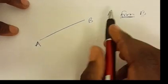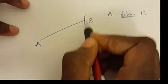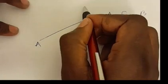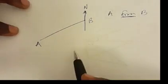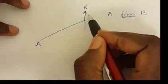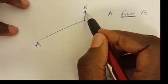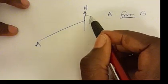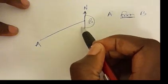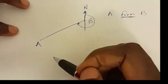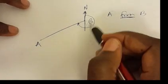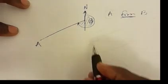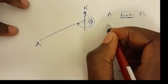At the point where you are standing, you draw a north line with a ruler. Bearing is measured clockwise from the north, so the reference is the north. You move clockwise until you reach the line that connects A and B — that is the bearing of A from B.